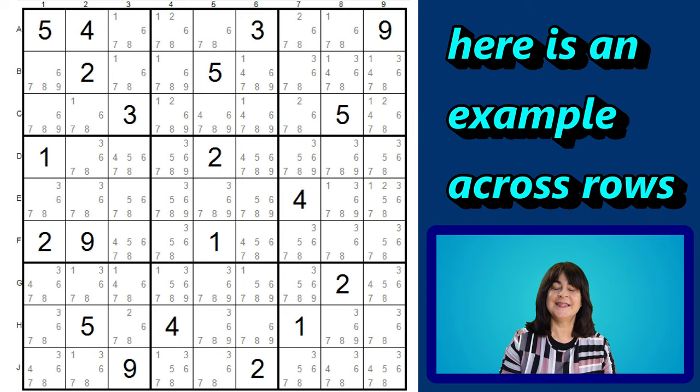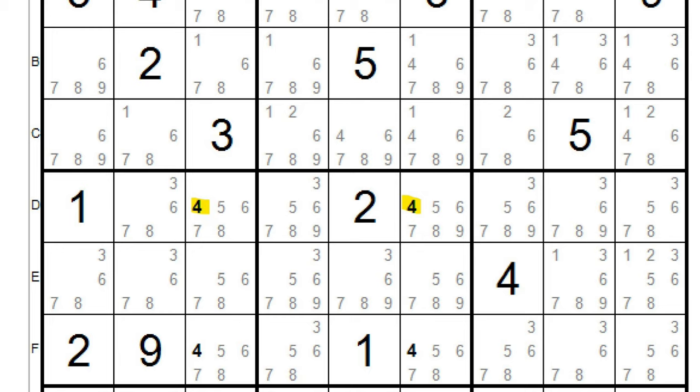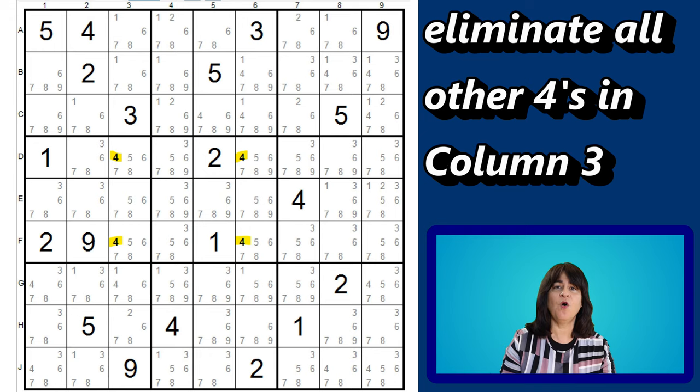In this case, the number 4 forms the corners of the 2x2 rectangle. In row D, the only place a 4 can go is in either columns 3 or 6. And in row F, the only place a 4 can go is in either columns 3 or 6. So now we can eliminate all the 4s as candidates in column 3, and all the 4s as candidates in column 6.